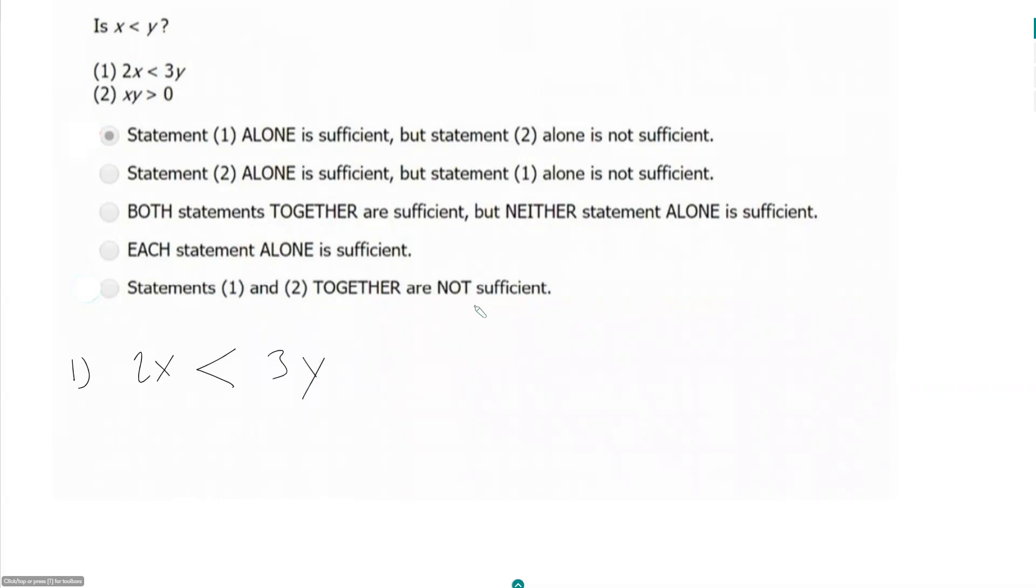Okay, but I want to know about x and y individually. So let's say make x and y both equal to 1. So 2 is less than 3, so that checks out. In this case, I have a no to my question, right?